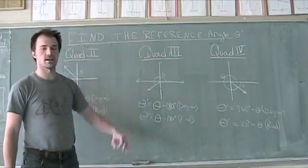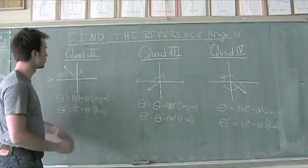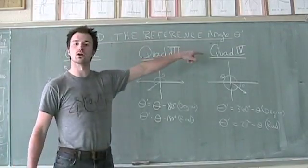When we're finding the reference angle theta prime, we're going to have a few different rules on how to find it if we're in quadrant 2, quadrant 3, or quadrant 4.